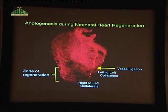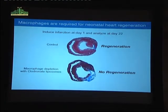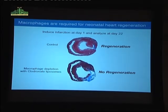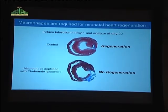We wanted to understand the cellular and molecular basis of new blood vessel formation, so we investigated the inflammatory response. We noticed that macrophages infiltrated into the heart following injury, and we eliminated the macrophage population by injecting animals with liposomes impregnated with clodronate, which can be phagocytosed by macrophages. In a neonatal heart with a myocardial infarction, looking 22 days later, it's regenerated — just a trace of the infarct. If we eliminate the macrophage population, regeneration is completely abolished and instead we have scar formation.